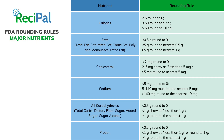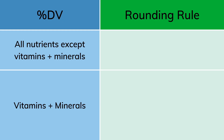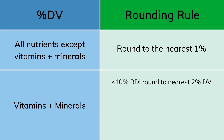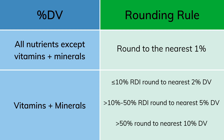Each major nutrient has its own ranges and different rounding rules, so as you can see, this could get kind of complicated. We've got a whole article that breaks this down — I'll link to it in the description. The percentage daily values are rounded too, and they have different rules as well. All nutrients except vitamins and minerals are rounded to the nearest 1%. Vitamins and minerals are like major nutrients, where they have ranges that dictate their rounding: less than or equal to 10% RDI is rounded to the nearest 2% daily value, between 10 and 50% RDI round to the nearest 5% daily value, and greater than 50% RDI round to the nearest 10% daily value.